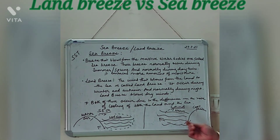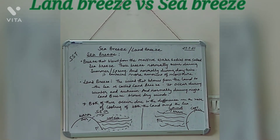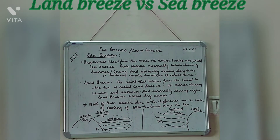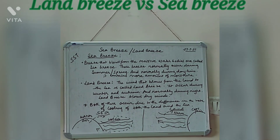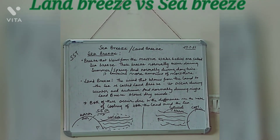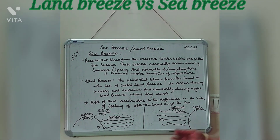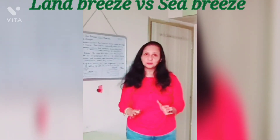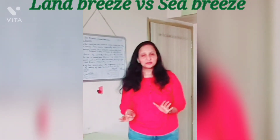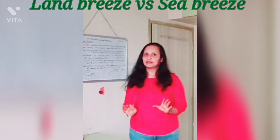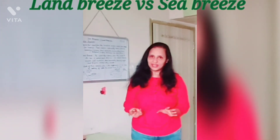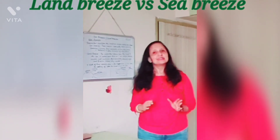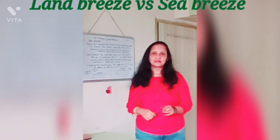Both sea breeze and land breeze occur due to the difference in the rate of cooling and heating of the land and sea — they do not heat up or cool down at the same rate, and so these breezes occur. I hope I have explained this topic clearly. Thank you for watching — kindly share and subscribe.